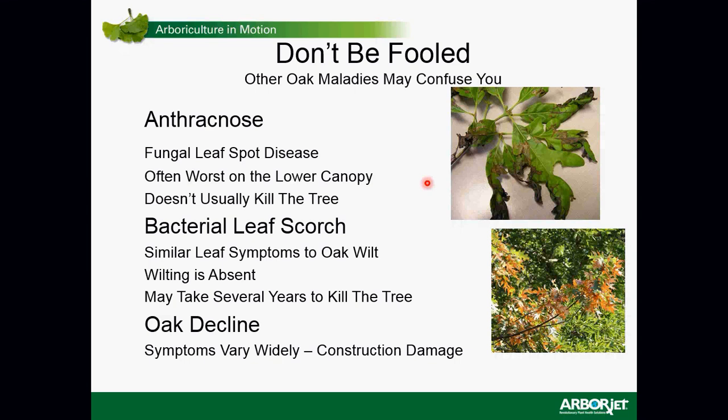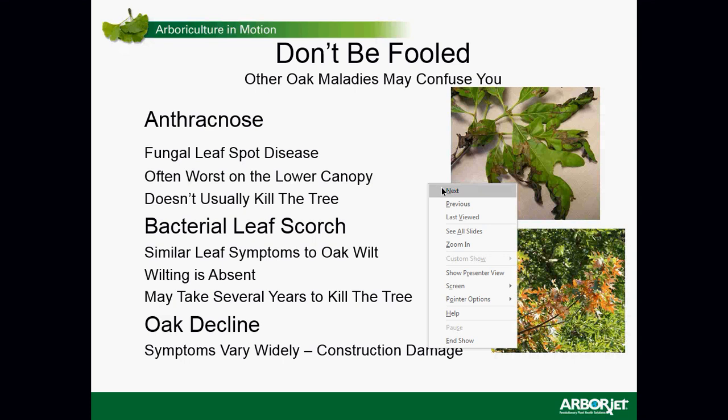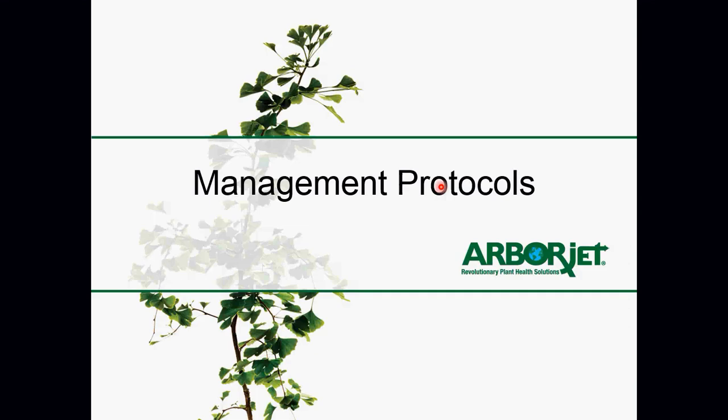Bur oaks are also susceptible to oak wilt disease. On a white oak or bur oak, oak wilt usually won't kill the tree all at once, so you might have oak wilt in a bur oak — culturing out the pathogen if you have any doubts is important. Bacterial leaf scorch is a possibility at the southern end of the range. The point is: if you have problems with your oak trees, make sure you have a plan to get that pathogen cultured out if you have any doubts.